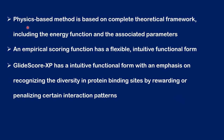When considering the previous physics based method, it is based on a completely theoretical framework which uses only the energy function and associated parameters. But in an empirical scoring function, it is more flexible and also has an intuitive functional form. An example is the Glide score XP, which has an intuitive functional form with an emphasis on recognizing the diversity in protein binding sites. The interactions are generally non-predictable, so it uses an intuitive functional form with certain rewarding parameters and penalizing parameters for the interaction patterns between the protein and the ligand.